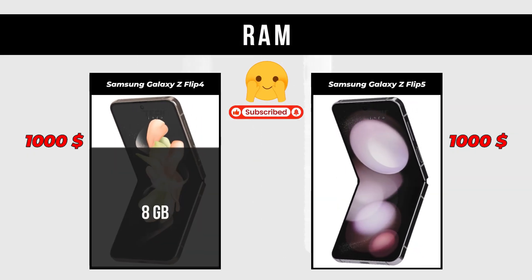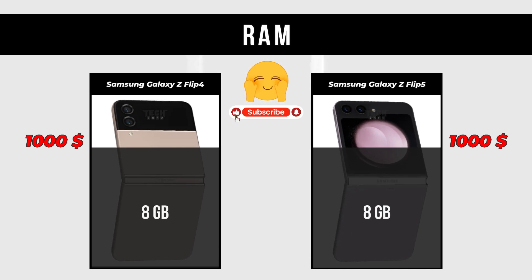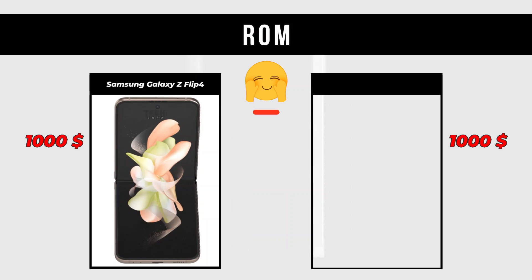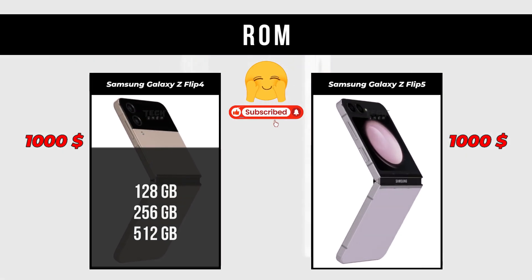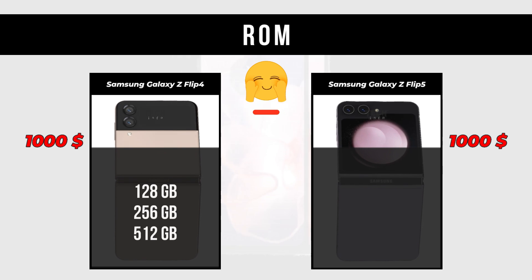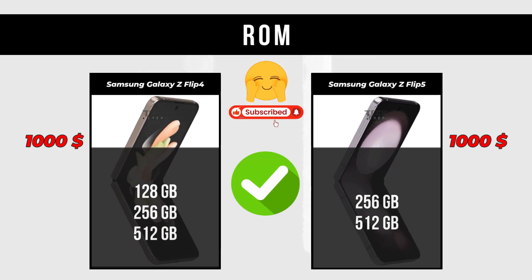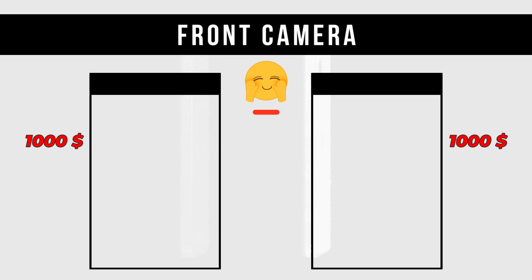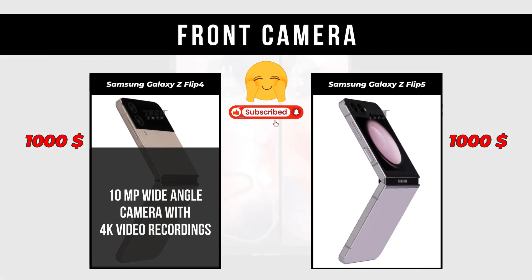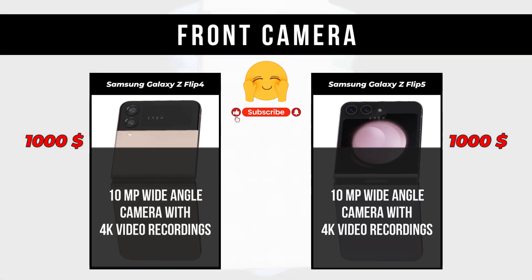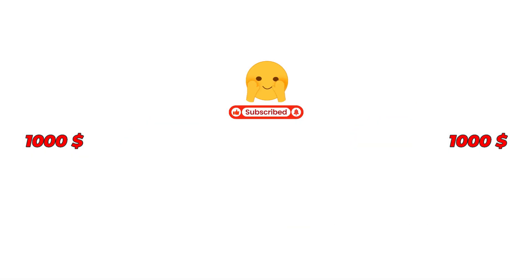RAM: Samsung Galaxy Z Flip 4 is 8 GB; Samsung Galaxy Z Flip 5 is 8 GB. Storage: Samsung Galaxy Z Flip 4 is 128 GB, 256 GB, and 512 GB; Samsung Galaxy Z Flip 5 is 12 GB RAM with 256 GB and 512 GB storage options.